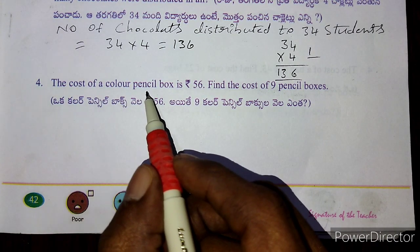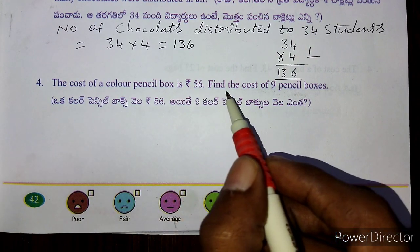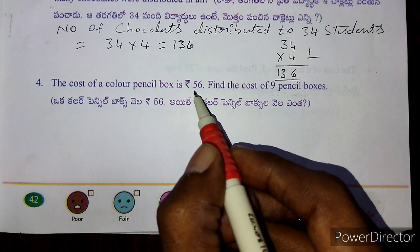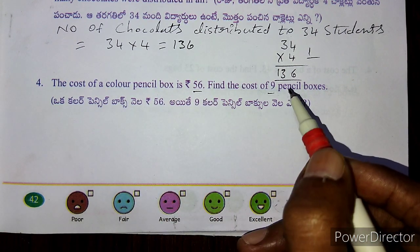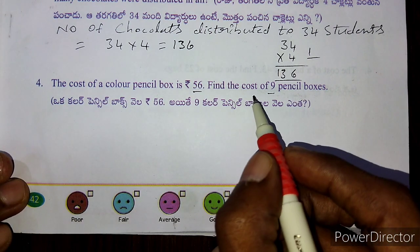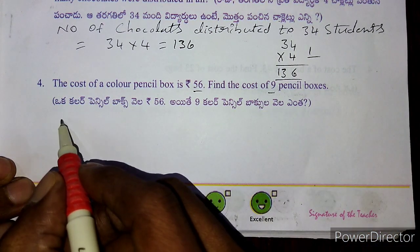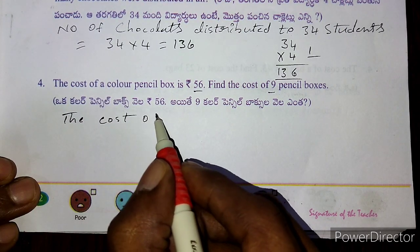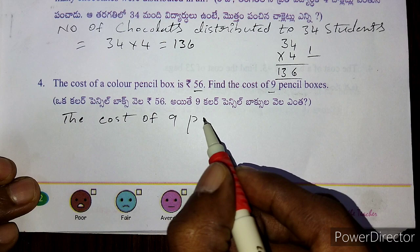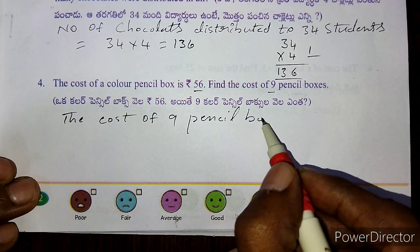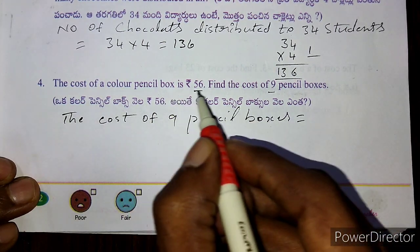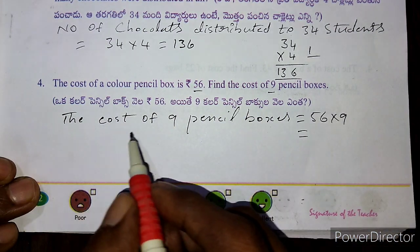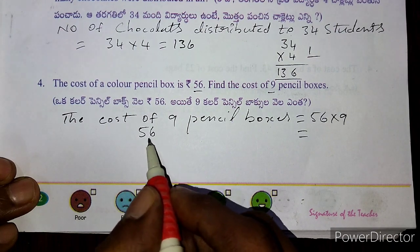The cost of one colour pencil box is 56 rupees. Find the cost of 9 pencil boxes. The cost of 9 pencil boxes equals 56 into 9.